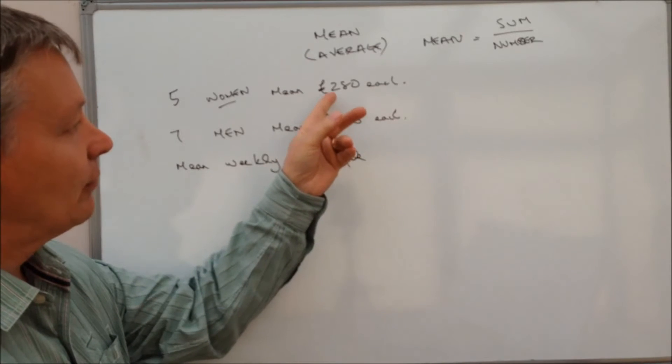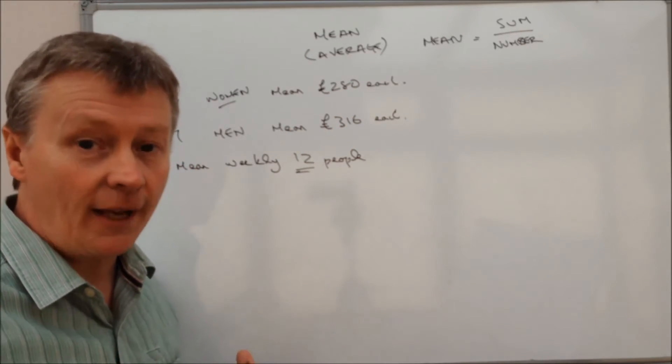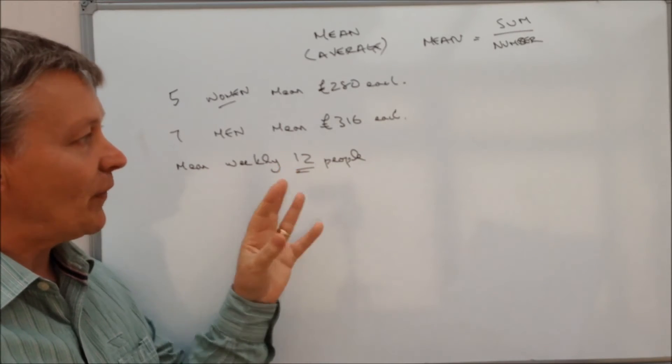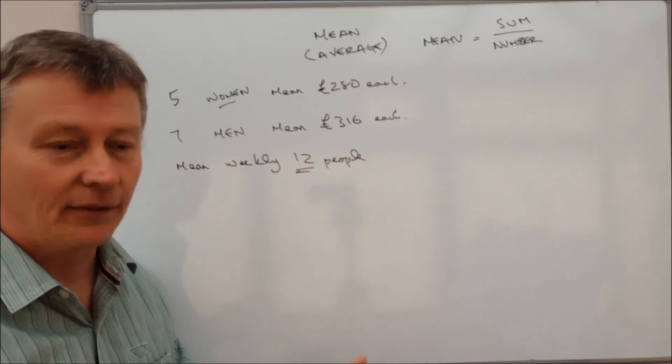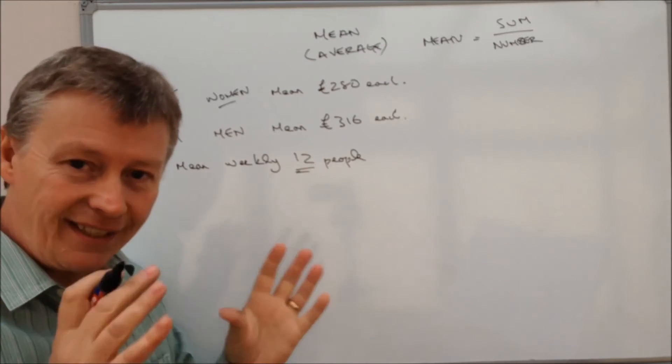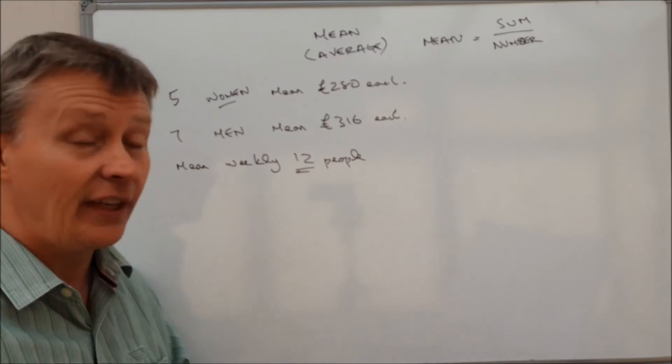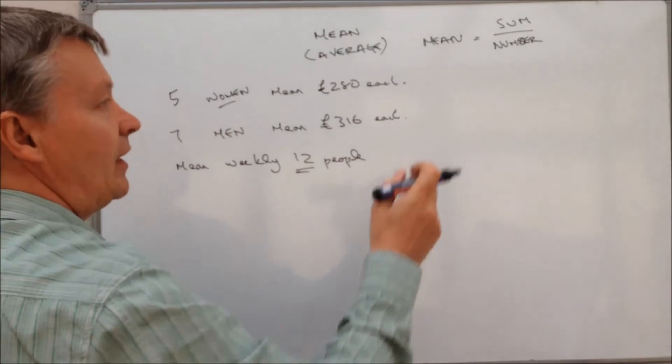Well if you have a look at the numbers, you've got 280 pounds each for the women and 316 pounds each for the men. So the average for each person is going to be roughly about 300 pounds. When you're doing these kind of questions, it's always good to have an idea in your mind as to what you think the answer is going to be. So let's now start applying the formulas.